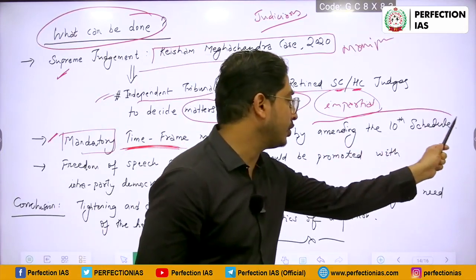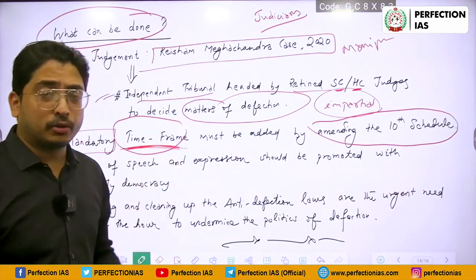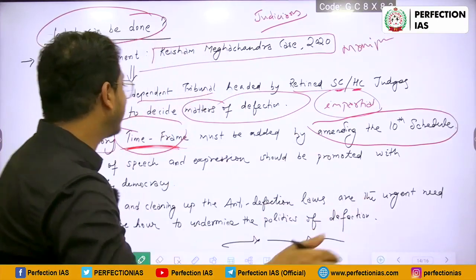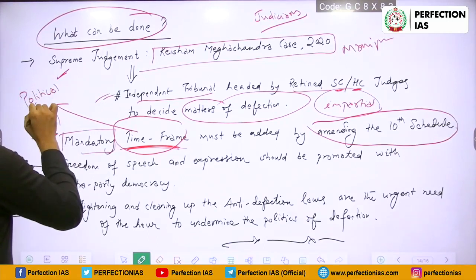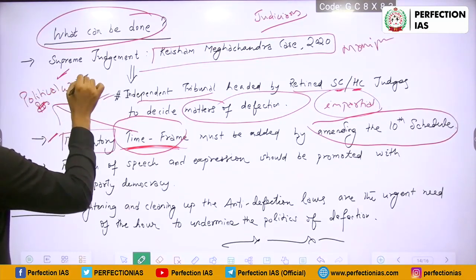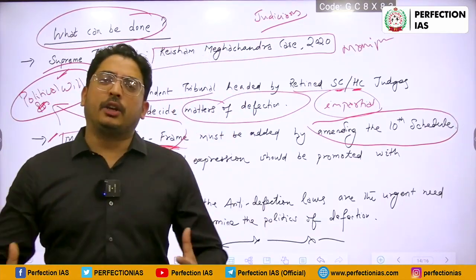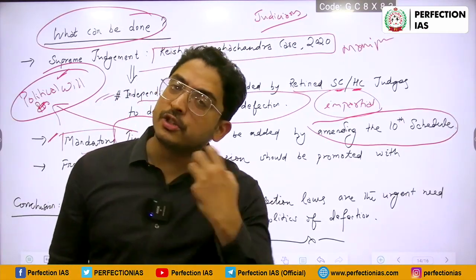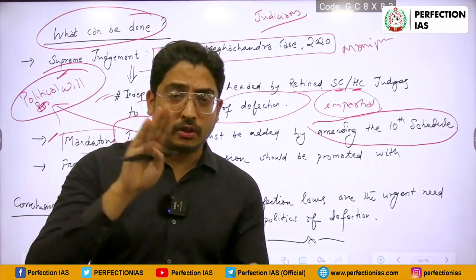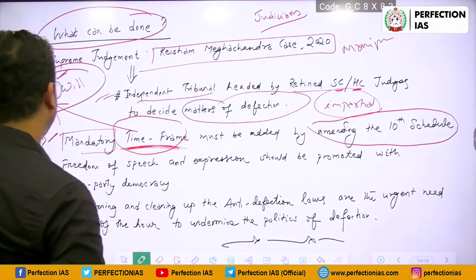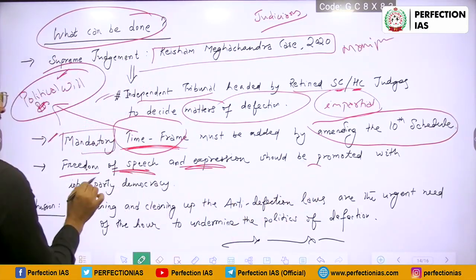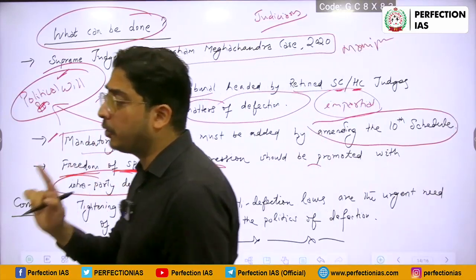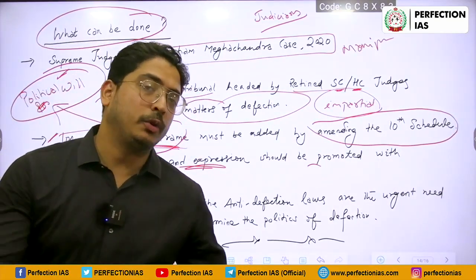Second suggestion: a mandatory time frame must be added by amending the 10th Schedule. But who will do it? The government needs political will — and since it may not be in their favor, political will is crucial. It all depends on the moral values of leaders, as they are representatives of the people and should preserve democratic ethos. Third: freedom of speech and expression should be promoted with intra-party democracy — without it, horse trading is the result we are all seeing.